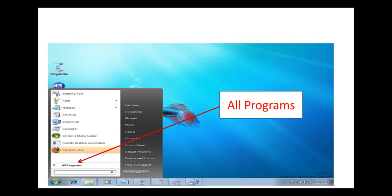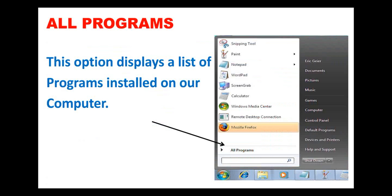We also have another option called 'All programs.' When you click on the start button, this menu pops up, and it also has something called the 'All programs' option. If we click on all programs, this option displays a list of programs installed on our computer. All the programs that are on your computer — the entire list will be displayed.